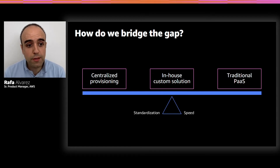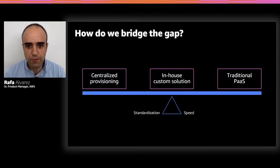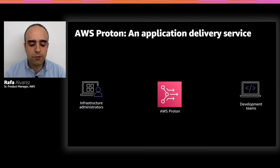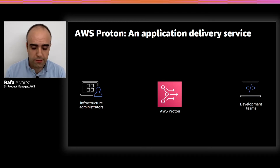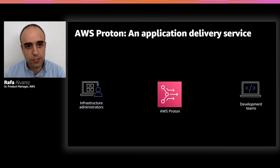The vision for AWS Proton is to solve this problem for all customers, no matter how complex the infrastructure is. So what is AWS Proton? It's an application delivery service. What this means is that it's sitting between the infrastructure administrators and the development teams during the process of creating that infrastructure.